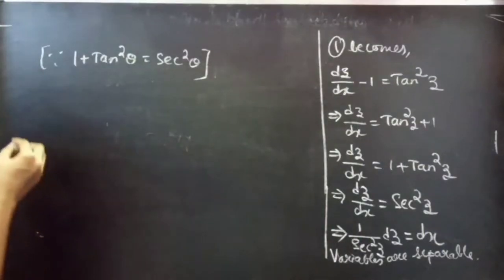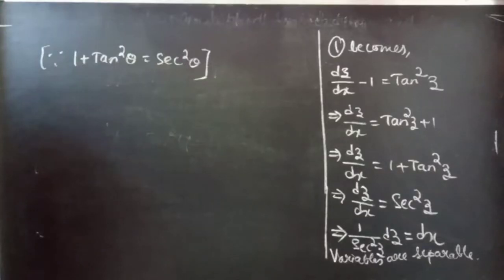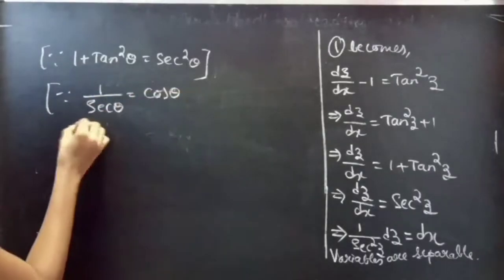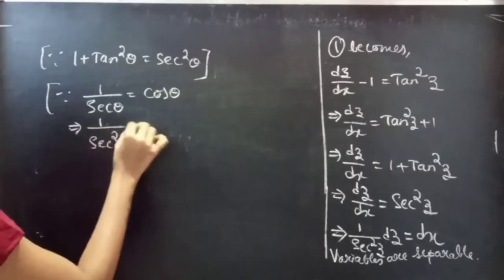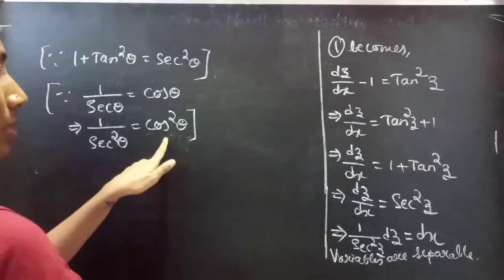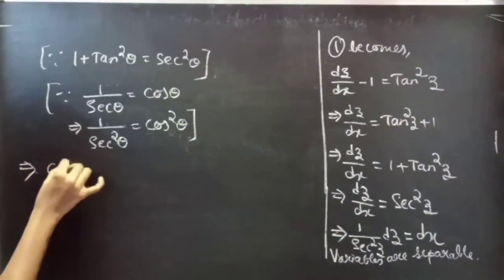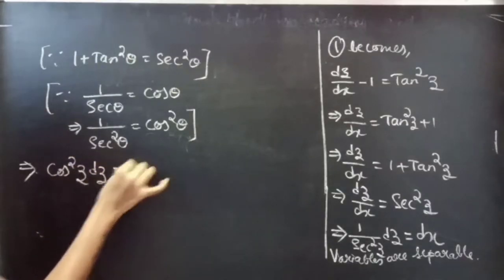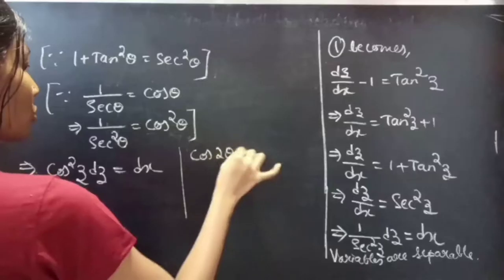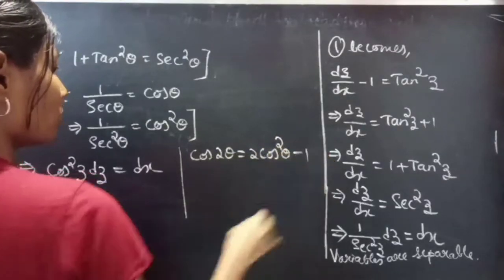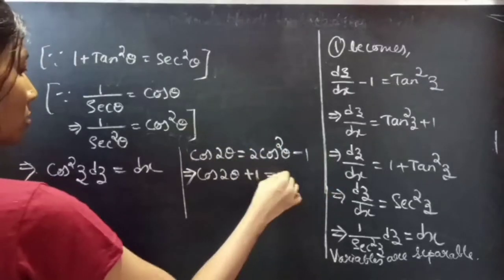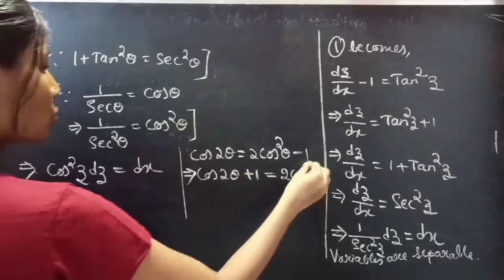Since we know that the reciprocal of secant theta is cos theta, squaring both sides gives 1 by secant square theta equals to cos square theta. Now, we can replace 1 by secant square z by cos square z. Then, this becomes cos square z into dz equals to dx. Also, we know that cos 2 theta equals to 2 cos square theta minus 1, so cos 2 theta plus 1 equals to 2 cos square theta.